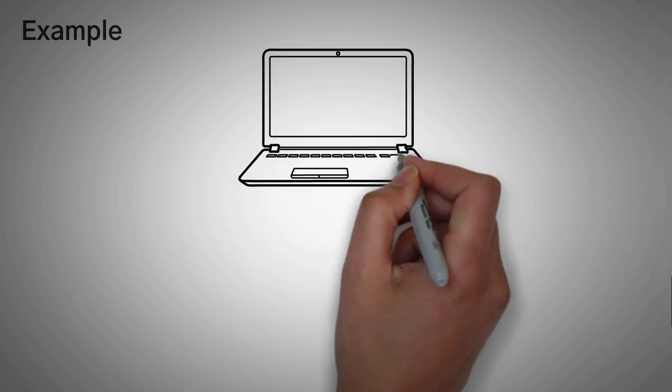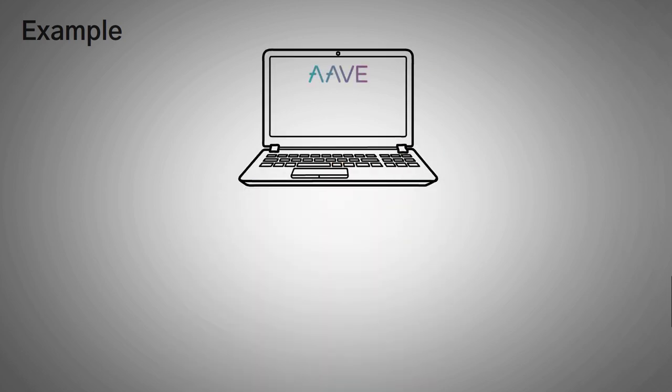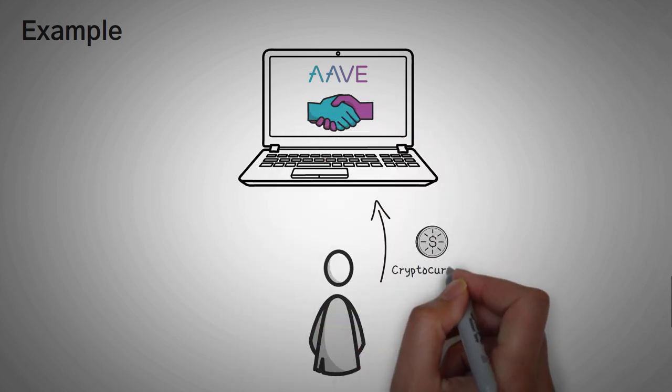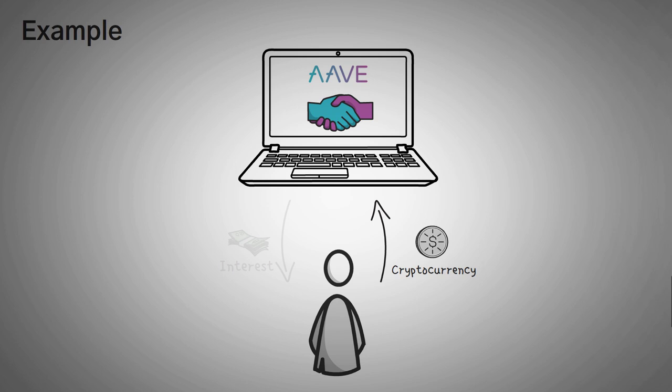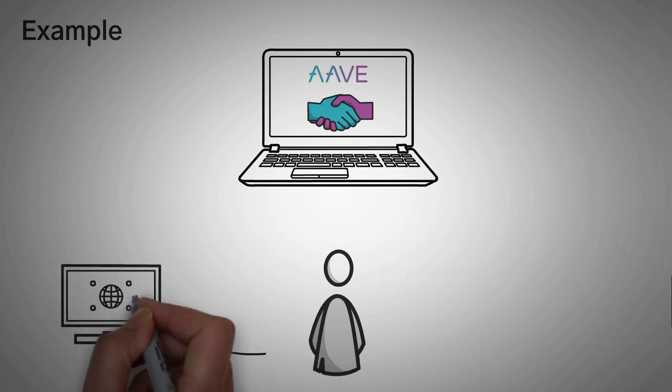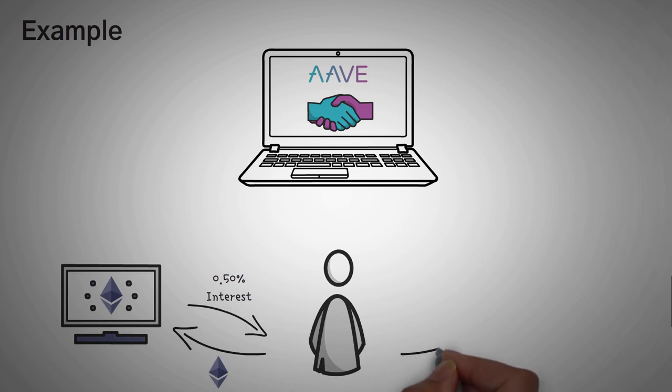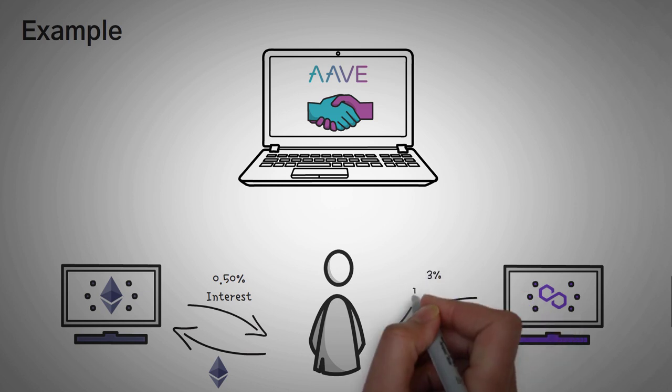Let's go over a very simple example as to why you would want to use a blockchain bridge. Aave is a very powerful and popular lending and borrowing platform that allows you to lend out your cryptocurrency in turn for earning interest on it. For example, if I lend out ethereum on the ethereum network, I can earn around half of a percent right now. However, if I lend out basically the same asset, ethereum, on the polygon network, I can earn three percent, which is six times the return.